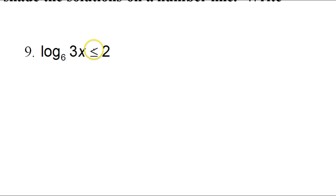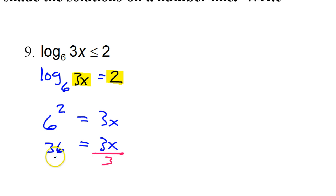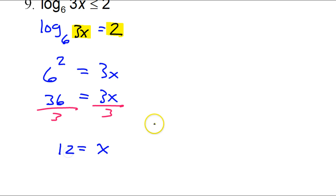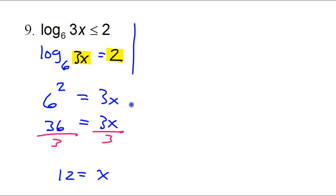Now, to go ahead and solve the problem, again, we will solve the related equation to get a critical value. So here's the related equation. To solve this, we would rewrite this in exponent form, starting with the base of 6, and then everything else sort of changes sides of the equation. So this would be 6 squared is equal to 3x. 6 squared, that's 36, is equal to 3x. Then you divide by 3. So that's going to give you x is equal to 12. So that's our critical value. Let's go ahead and graph that on a number line. So here is 12.